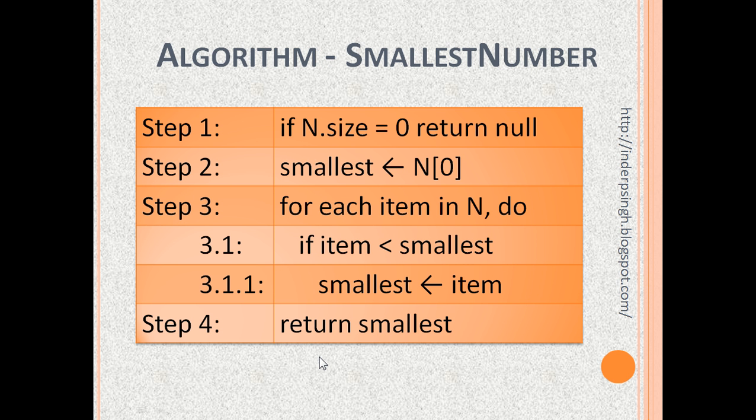This algorithm finds the smallest number in a list of numbers. The input to this algorithm is a list of numbers, say n. The output of this algorithm is the smallest number in the list n. Notice that the language used to write this algorithm is similar to any programming language. This kind of code is called pseudocode.